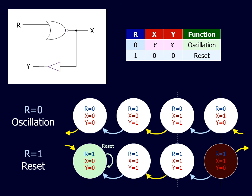The overall function of this circuit is described in the function table. R equal 1 forces an output reset. For R equal 0, oscillation occurs because X tracks the inverse of Y due to the NOR gate, whereas Y tracks the value of X due to the buffer.